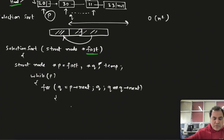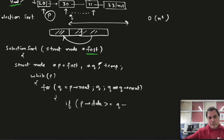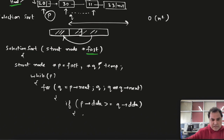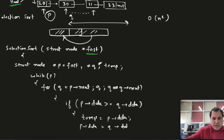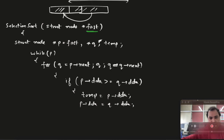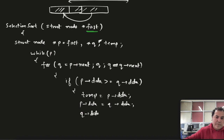Now, if p->data is greater than or equal to q->data, meaning the second value is smaller, we perform a swap. Put p->data into temp, then replace p->data with q->data, and finally assign temp to q->data. This is simple value swapping within the linked list.